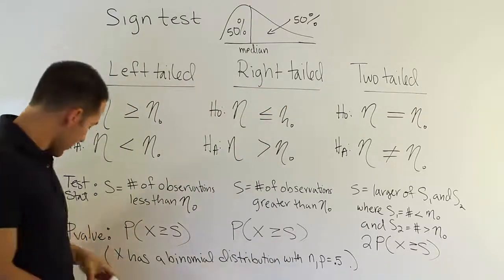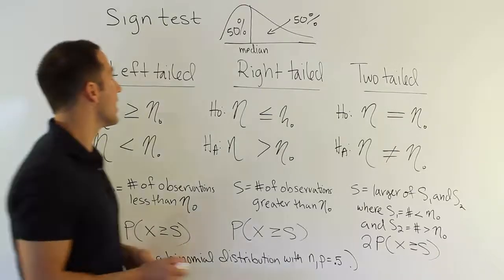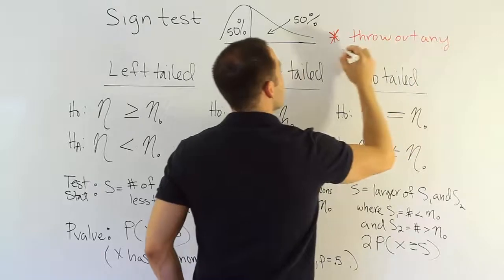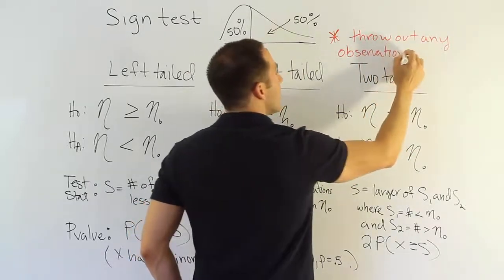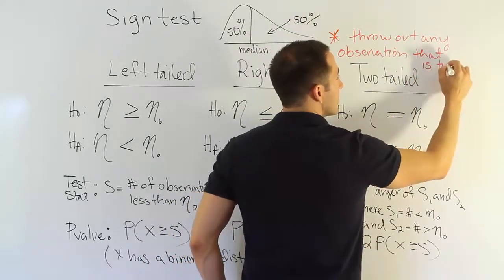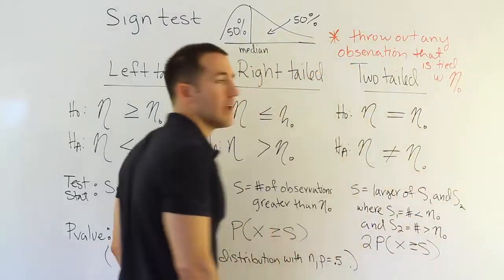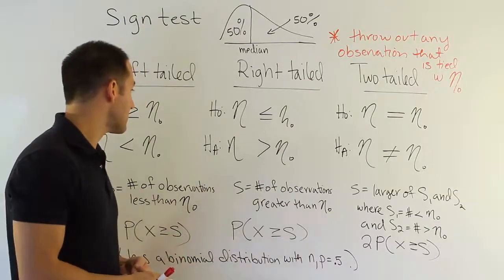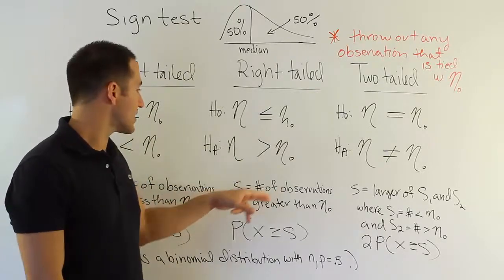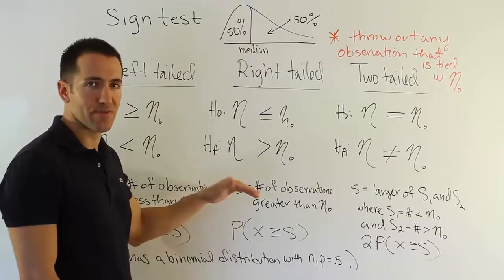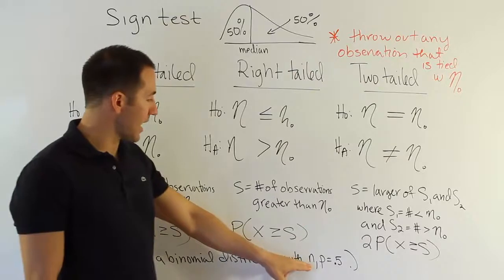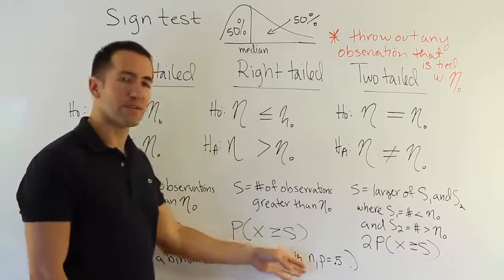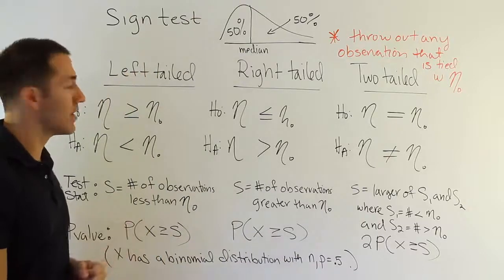There's only one important detail we cannot forget here, and that is we have to remember that we're going to throw out ties. So I want to say this, that throw out any observation that is tied with eta-naught, eta-naught being my hypothesized median. In other words, what would I do if I went to Taco Bell and I waited exactly 10 minutes? Well, that would be a problem because then I wouldn't be able to say what? It's not an observation that's greater than 10. It's also not an observation that's less than 10. It's right on the line, so we toss that out actually, and that would reduce our n. So if I had gone to the Taco Bell, say, 15 times, but I had one tie, I would remove that case and just pay attention to the 14 other visits that were not ties. So that's an important thing, throw out any observation that's tied.